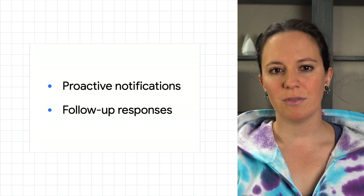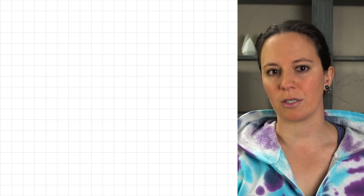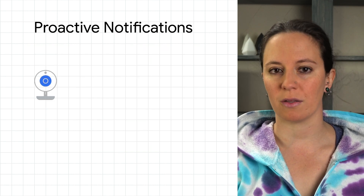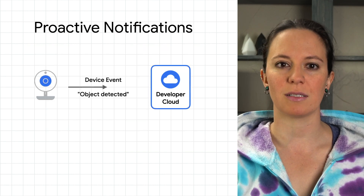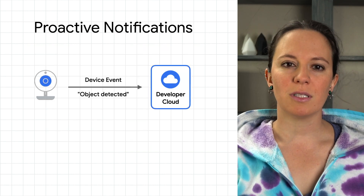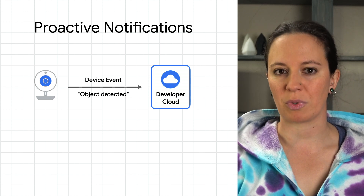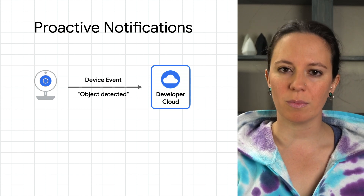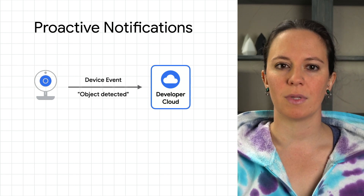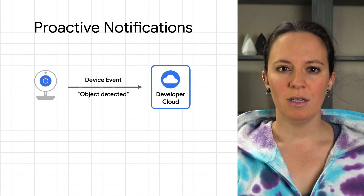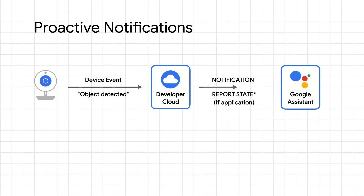A proactive notification triggers without any preceding user requests to their smart home devices, and alerts the user of a device event, such as the dishwasher cycle completing or a doorbell ringing. When these device events occur, your action fulfillment sends a notification request to Google.